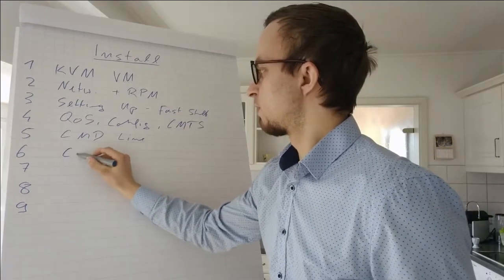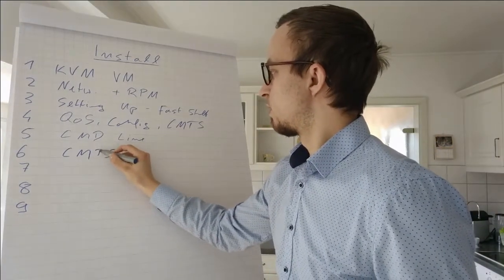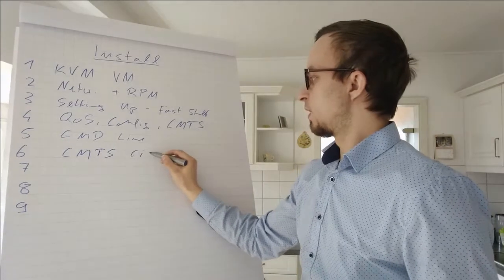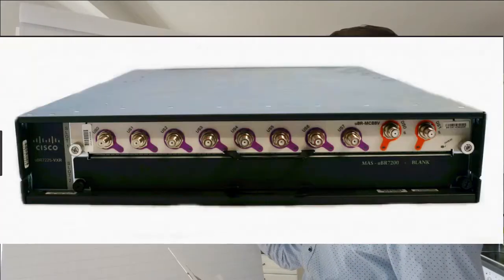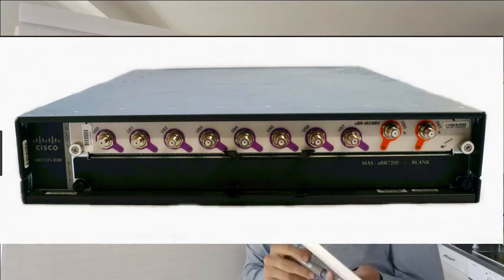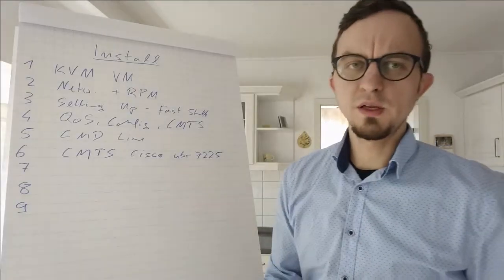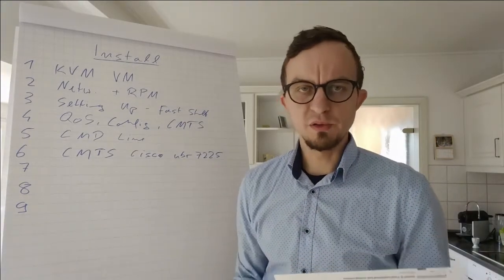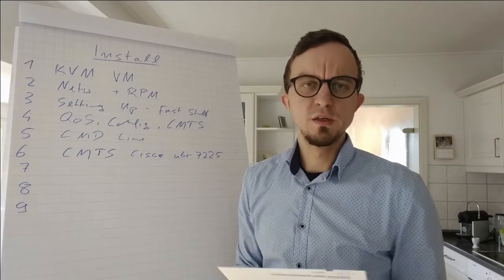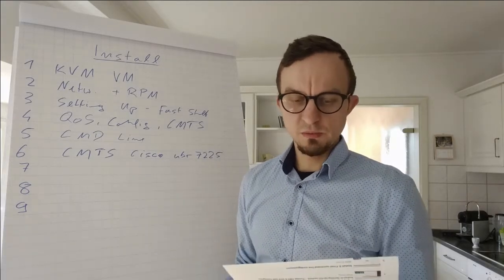So I will make this by Cisco UBR 7225 and I will exactly show you how you can link or how you can use a serial interface and what you need to type into the CMTS to bring a first cable modem online.